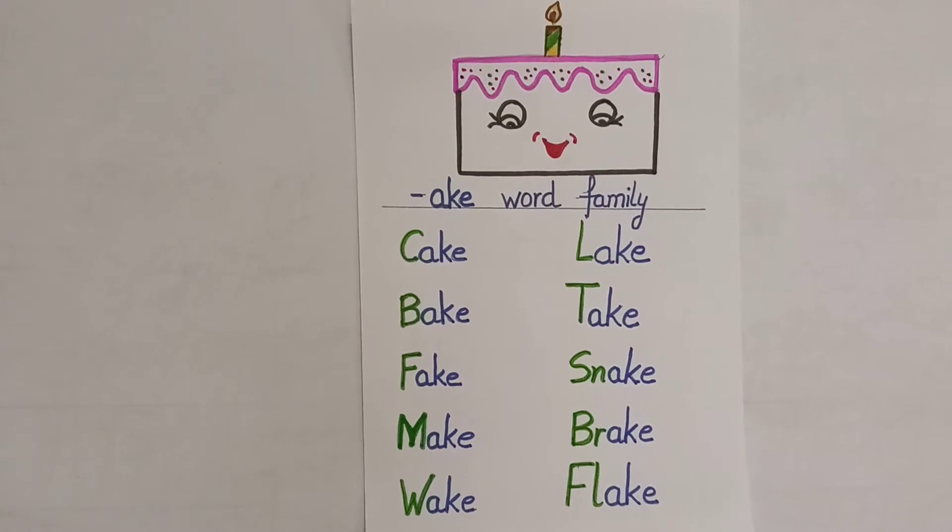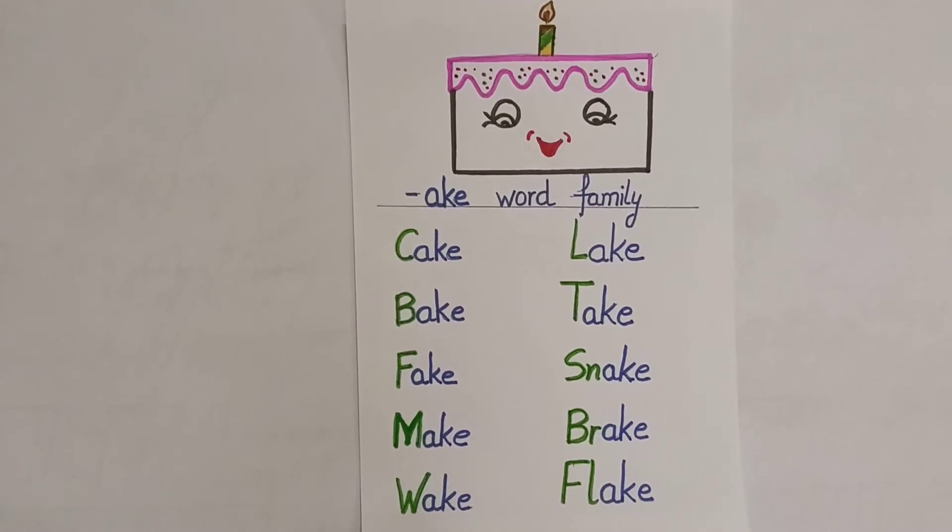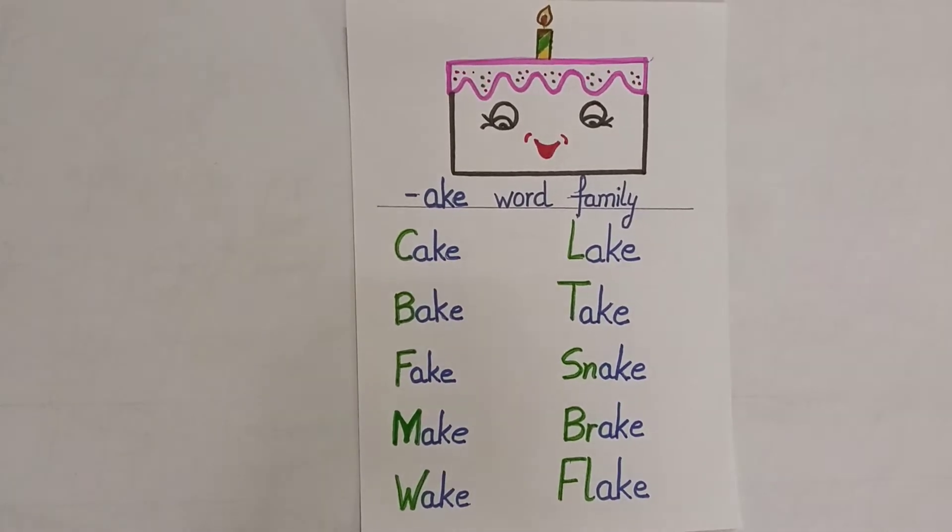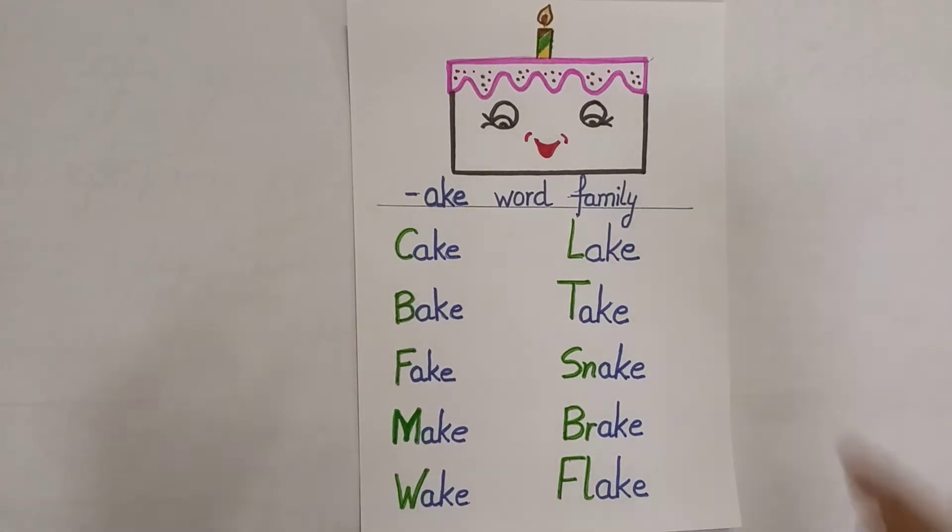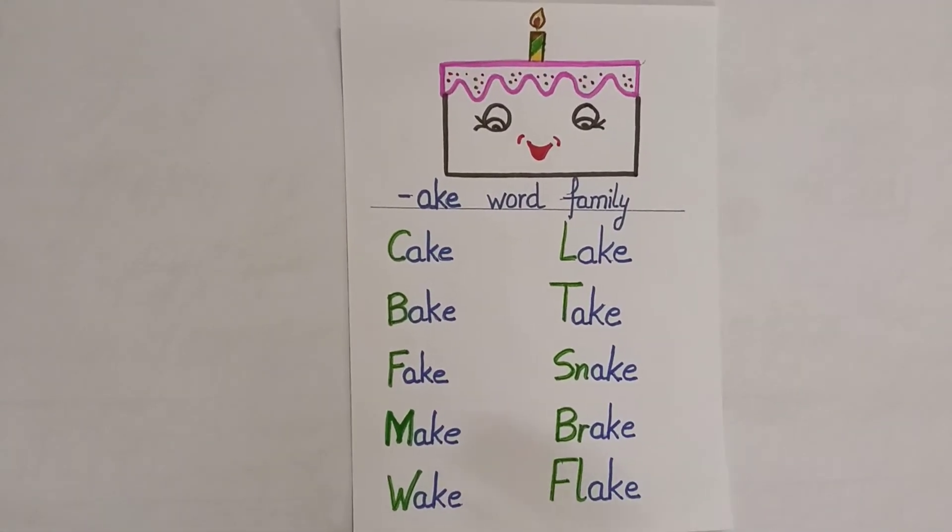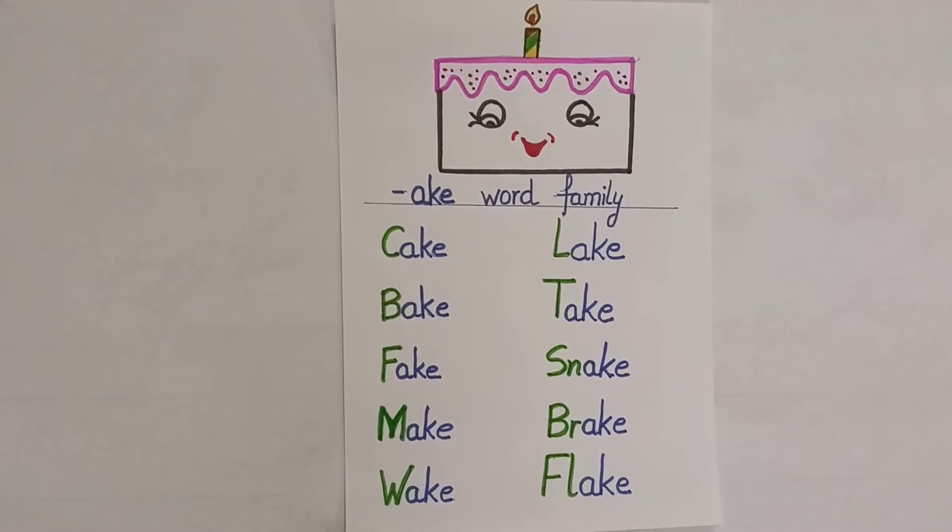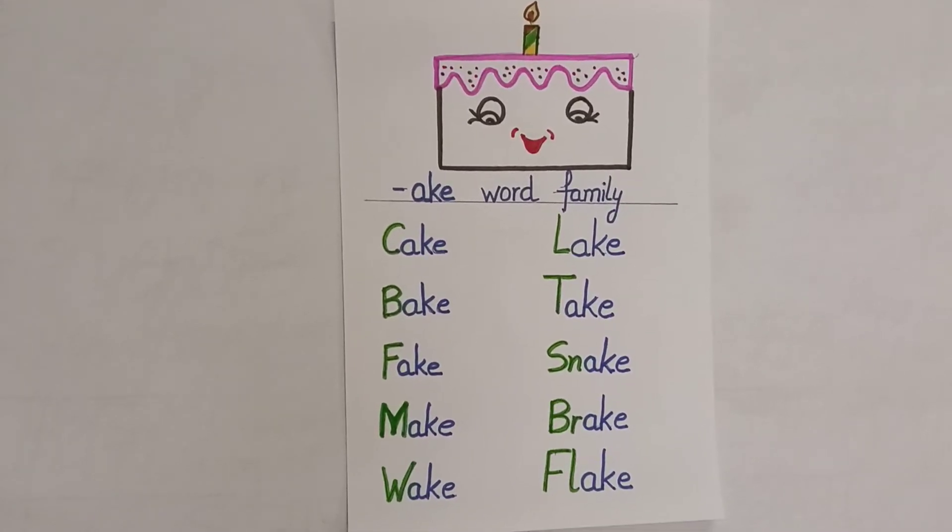First of all, I've drawn this cake - this is a small cute cake that I have drawn. So what is this? This is cake. Now I'll show you how to speak and tell children about these words.